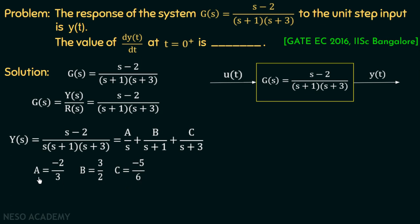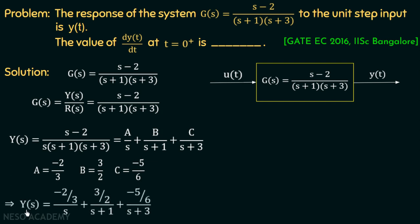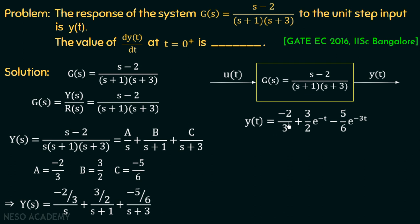We have calculated the values: A = -2/3, B = 3/2, C = -5/6. So Y(s) = (-2/3)/s + (3/2)/(s+1) + (-5/6)/(s+3). Applying the inverse Laplace transform, y(t) = -2/3 + (3/2)e^(-t) - (5/6)e^(-3t). This is the unit step response of the system.